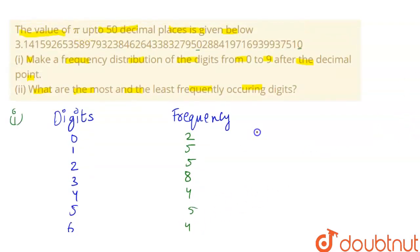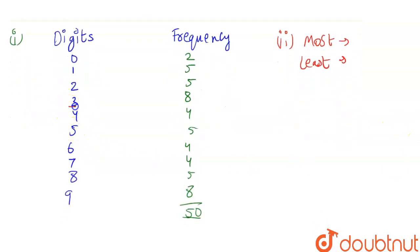Now, second part here we have: what are the most and the least frequent occurring digits? Most and the least. Most are 3 and 9 because they are occurring 8 times, and least is 0 which is occurring just one time.